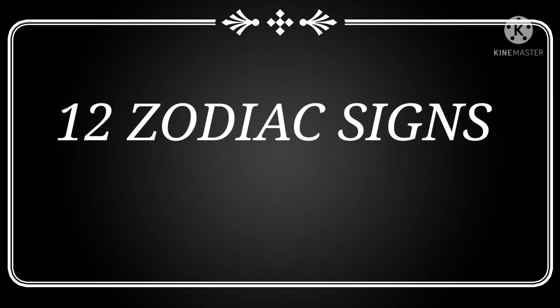As you know that there are 12 houses, similarly 12 zodiac signs are also there, which are placed in these houses and every zodiac sign is being governed or ruled by some planet. Let's talk about it in detail.